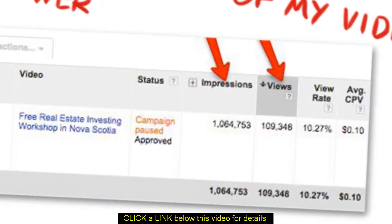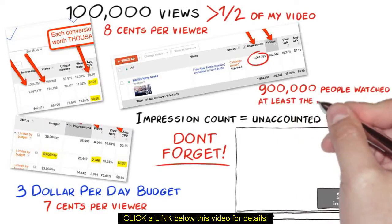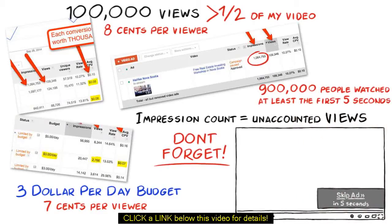As you can see from this screenshot, it has over 100,000 views that were paid views. But take a look at this. We have over 1 million impressions and over 100,000 views, which means 900,000 plus views of people who watched at least 5 seconds or a little less than half of the video. Paid absolutely nothing for these 900,000 views, which are unaccounted views.